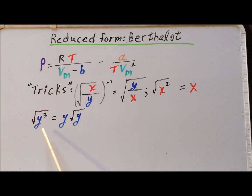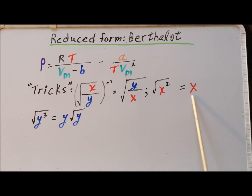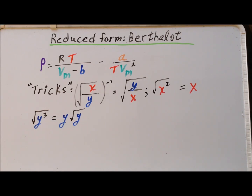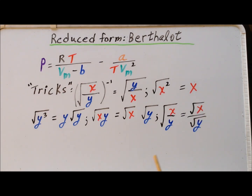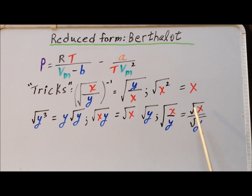Next, if we take the square root of Y cubed, we can write this as Y times the square root of Y, where we use this property to pull out a Y from underneath the radical sign. Next, the square root of X times Y is equal to the square root of X times the square root of Y. And finally, the square root of the fraction X divided by Y can be rewritten as the square root of X divided by the square root of Y.